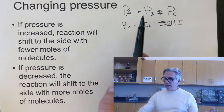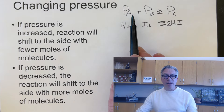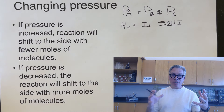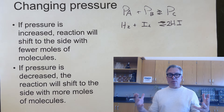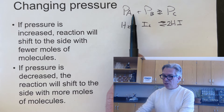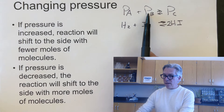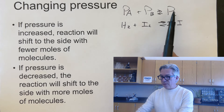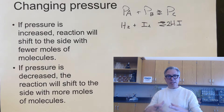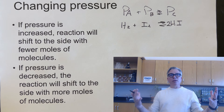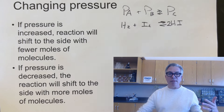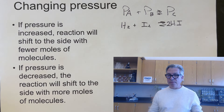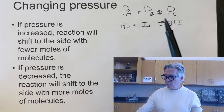For example, if I smush the container and make the pressure go higher, the system will shift right to take two molecules and make one molecule, reducing the number of molecules. If I expand the container again, the equilibrium shifts back the other way to make more molecules to fill that room. Consider H₂ + I₂ ⇌ 2HI — two molecules on the left make two molecules on the right, so changing pressure won't shift this equilibrium either way.